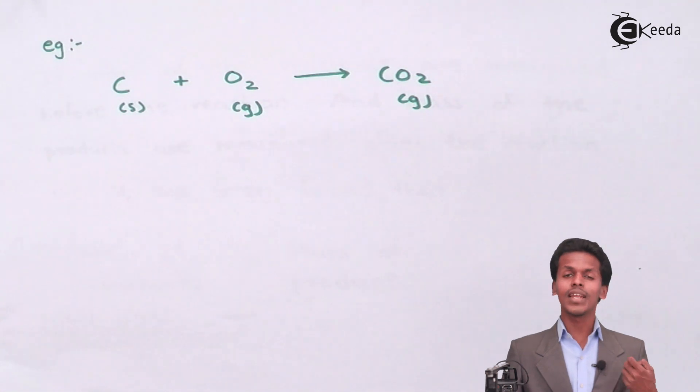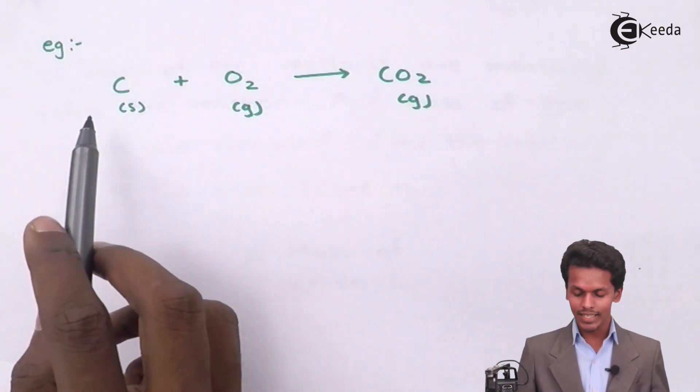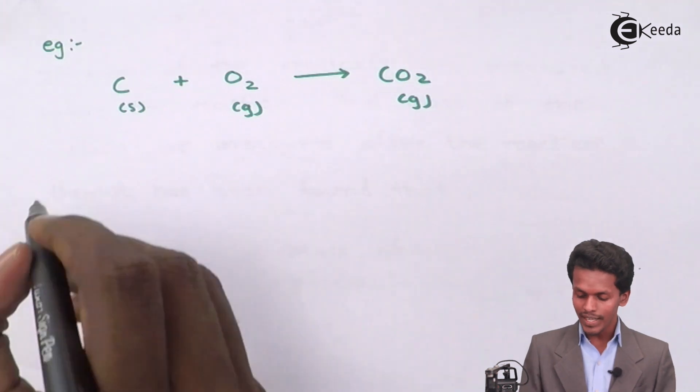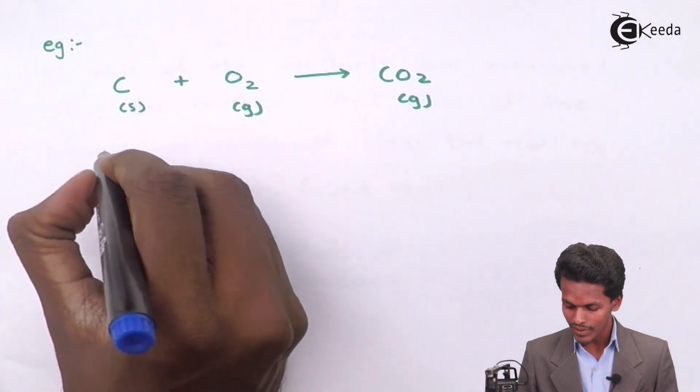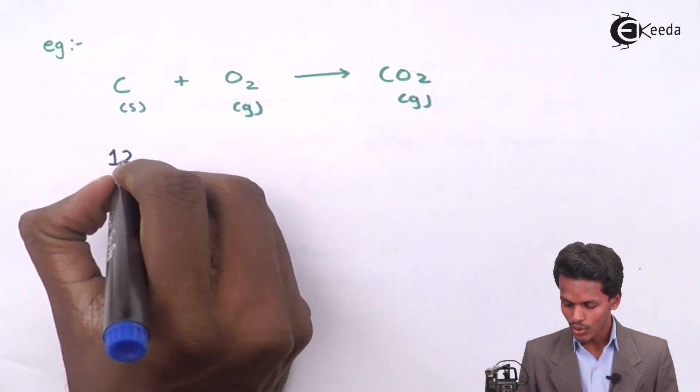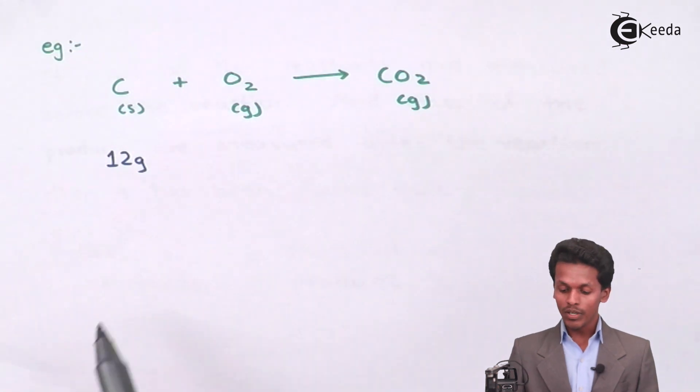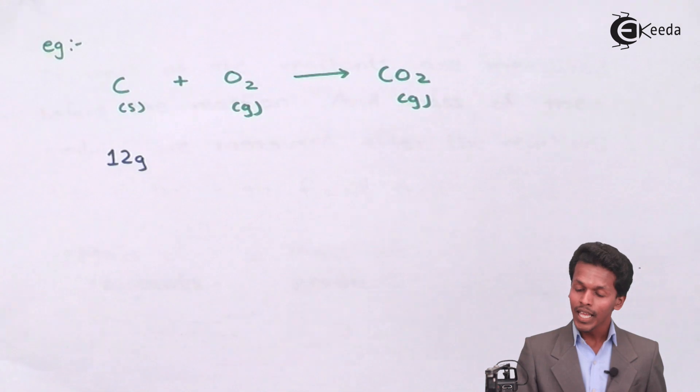Suppose we take one mole of carbon. One mole of carbon weighs 12 grams. Now talking about oxygen, which is in molecular format O2...